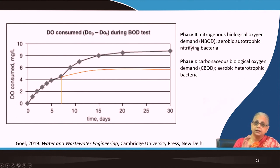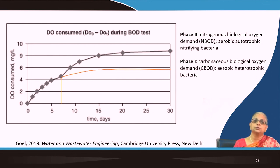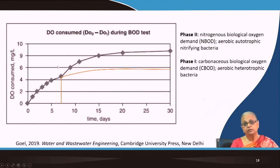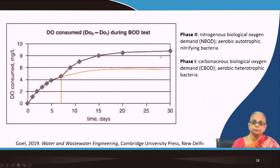Ammonia plus oxygen is converted to nitrite and nitrate — this second phase represents that reaction where oxygen is consumed. The orange line extension of the first part of the curve shows the ultimate carbonaceous BOD; the remaining portion is the nitrogenous BOD.